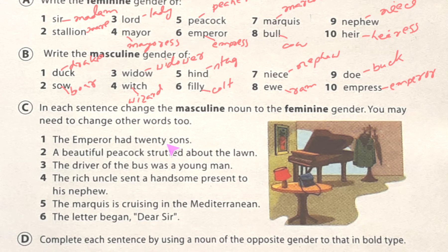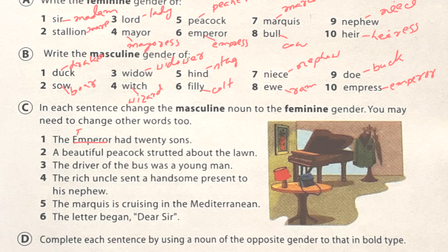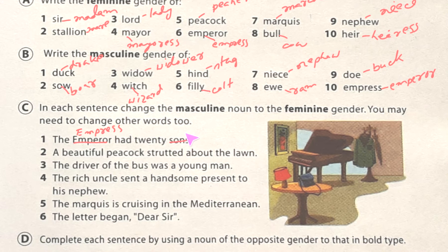We will change emperor and sons. So we write: 'The empress had 20 daughters.'